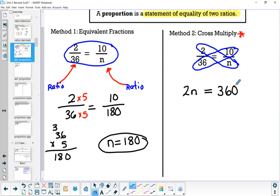Now from here, you want to solve this equation by dividing both sides by two. So on the left side, the twos will reduce. So we have 1N equals 180. Notice how I got the same answer? Different method. Method one, I used equivalent fractions. That's long. Method two, I cross multiplied. It's a trick. It's faster.